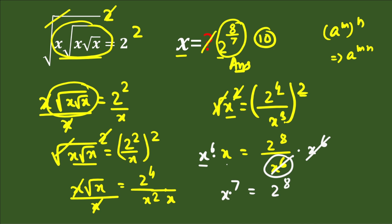To calculate the value of x, we raise both sides to the power of 1 over 7. On the left-hand side, 7 and 7 cancel, leaving x. So x equals 2 to the power of 8 divided by 7, that is 2^(8/7). We have calculated the same value both ways — this is the answer.